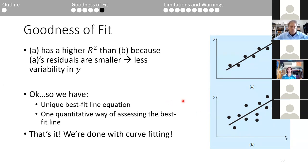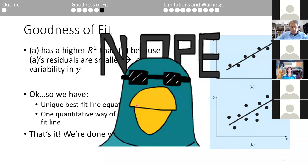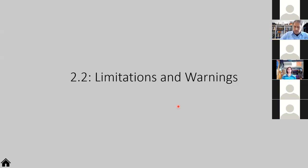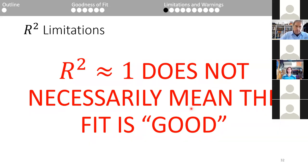So we did least squares regression — took partial derivatives, set up the 2×2 or 3×3 matrix, solved for coefficients, and went over the basics of R²: what it means, how to interpret it, how not to interpret it, and how to calculate it. But we're not done. This is an engineering analysis class, not just a MATLAB class. Some limitations of R² need to be addressed, because it may be tempting to misuse this number.